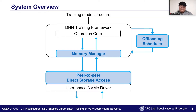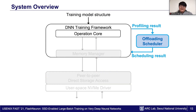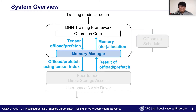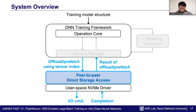Flash in Neuron consists of three components: offloading scheduler, memory manager, and peer-to-peer direct storage access. The offloading scheduler identifies a set of tensors to upload and generates an offloading schedule. The scheduler first performs a profiling iteration to collect various runtime information. The memory manager orchestrates data transfers and manages tensor allocation and deallocation caused by tensor offloading and prefetching. Lastly, peer-to-peer direct storage access enables direct communication between the GPU and NVMe SSDs to minimize host intervention during tensor offloading and prefetching.